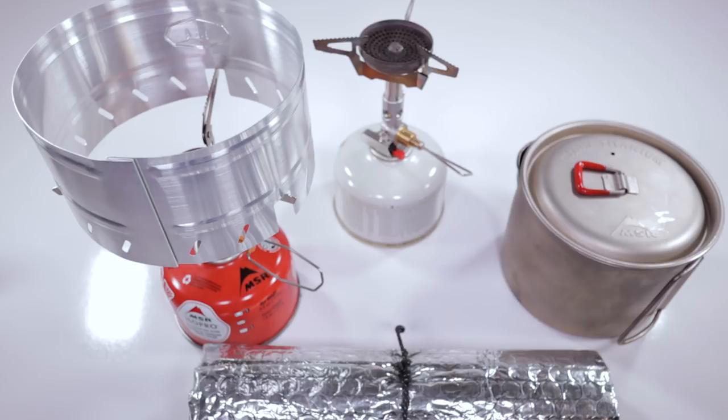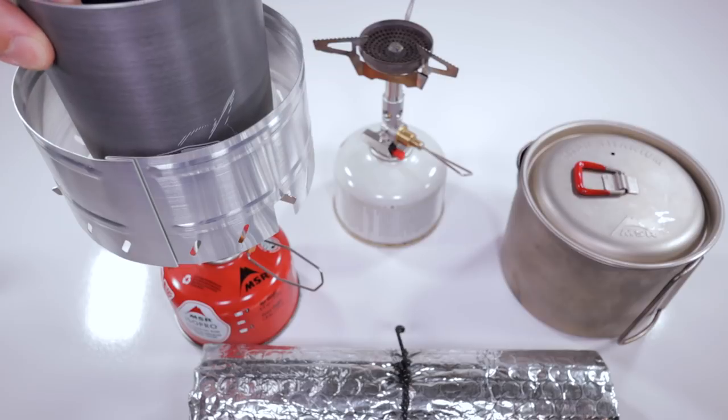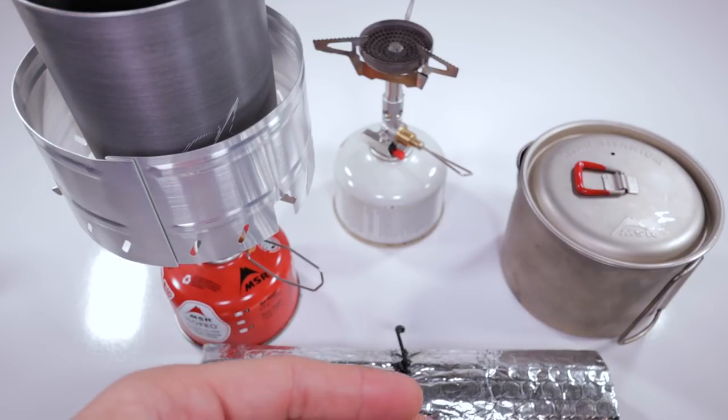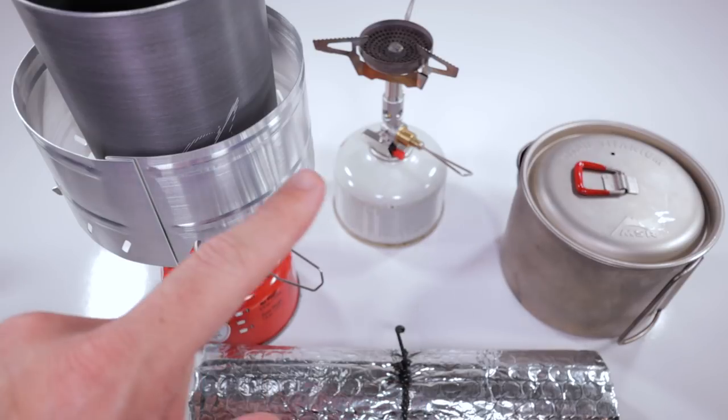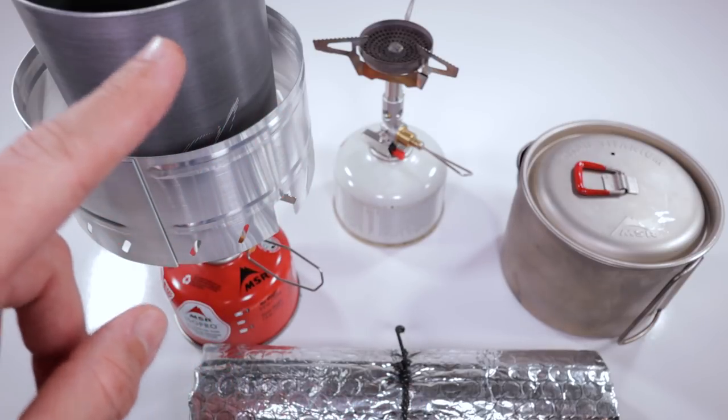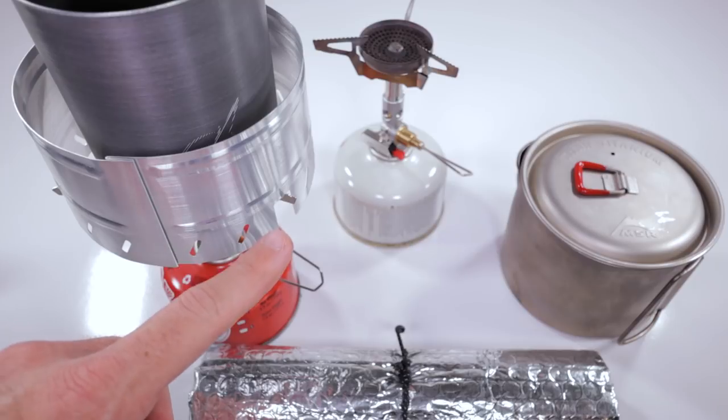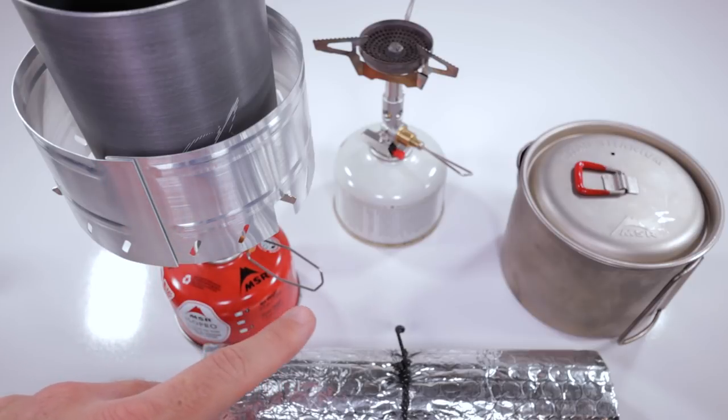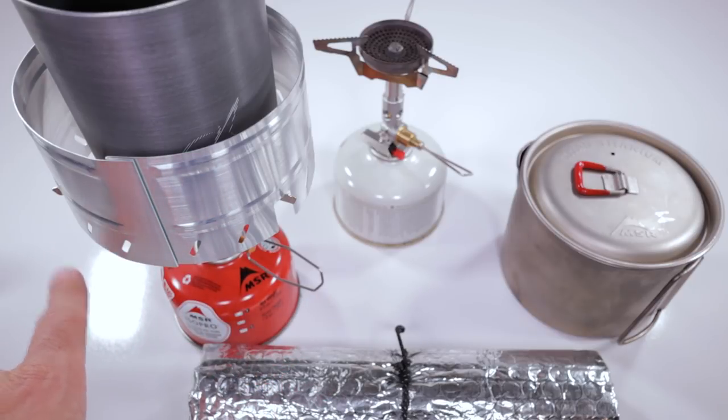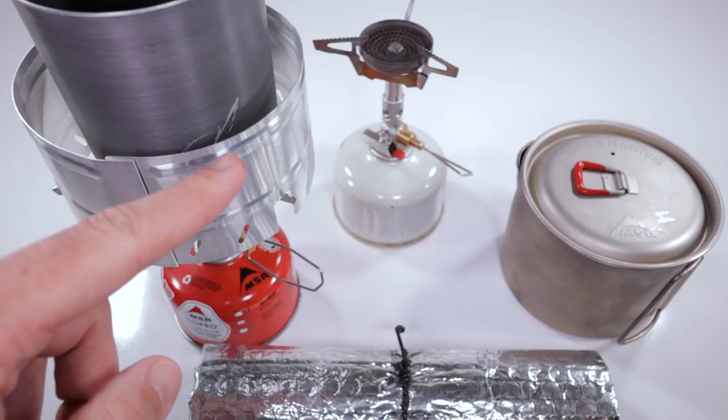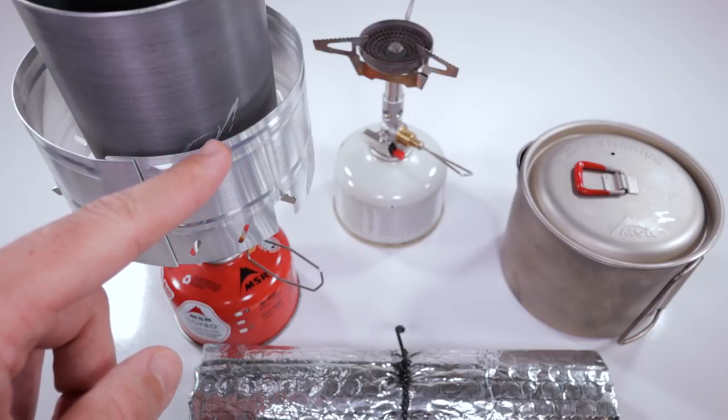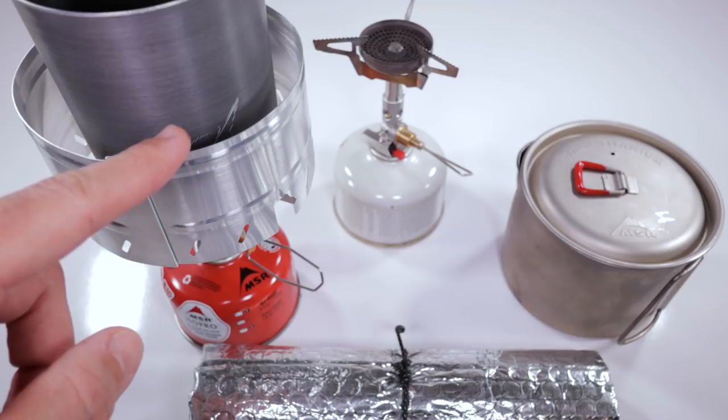The third thing that probably disqualifies it the most is the efficiency as it relates to the third benchmark: is the windscreen tall enough? The windscreen certainly covers the flame of the stove. It is open on the bottom, which is not a bad thing, but you can definitely get wind coming through the bottom. The bigger problem is everything from the edge of this windscreen up.